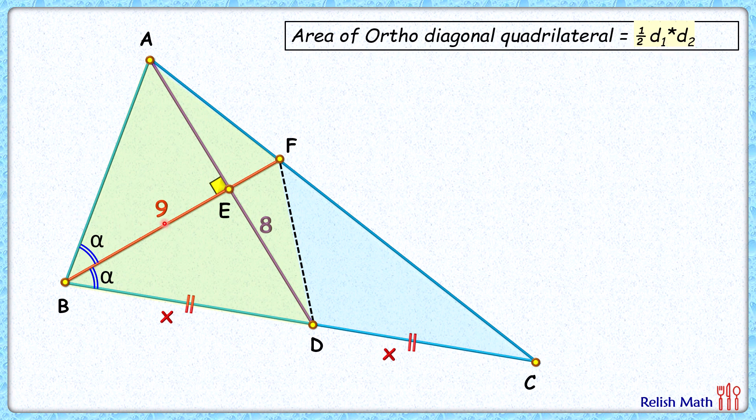Any quadrilateral where diagonals are perpendicular, its area is half d1 times d2. So here this area will be half of 9 times 8, or 36 cm². Now in this quadrilateral area, if we can add this triangle FDC area, we'll get the area of the complete triangle.